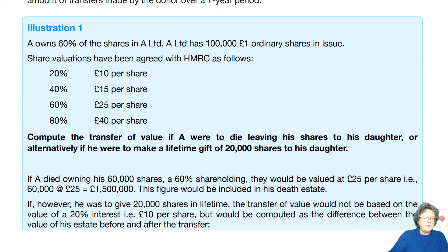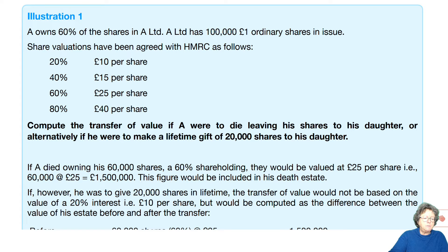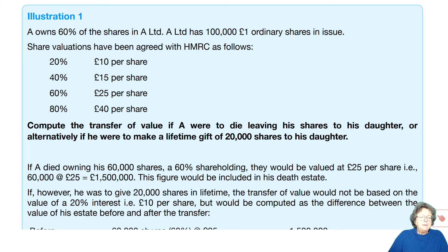How to work out the transfer of value? We have an illustration here. A owns 60% of the shares in A Limited. A Limited has £100,001 ordinary shares in issue. The share valuations have been agreed by the revenue: if you own 20% of the shares, each one is worth £10; 40%, £15; 60%, £25; 80% and above, £40.